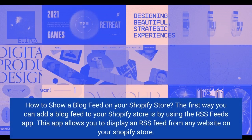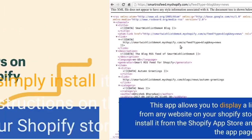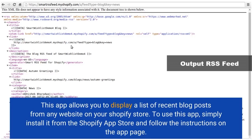How to show a blog feed on your Shopify store. The first way you can add a blog feed is by using the RSS Feeds app, which allows you to display an RSS feed from any website on your Shopify store. Simply install it from the Shopify app store and follow the instructions. Another way is by using the Blog Feeder app, which displays a list of recent blog posts from any website on your store.